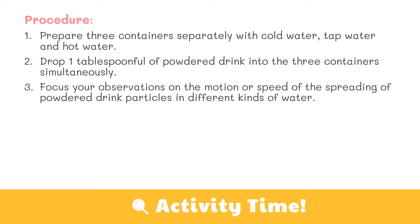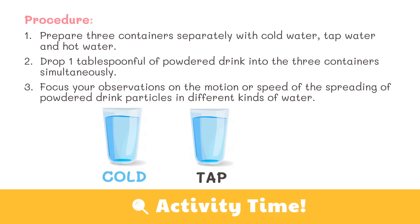Let's perform this activity. Prepare three containers separately with cold water, tap water, and hot water, and one tablespoon of powdered drink for each of the three containers. If you have someone who can help you, ask for assistance so you can drop one tablespoon of powdered drink into the three containers simultaneously. It would be best if you drop them at the same time so you can see the difference in how the powder drink travels in the hot, tap, and cold water.